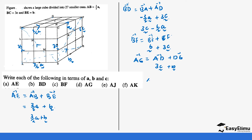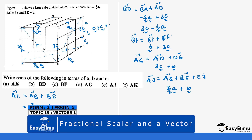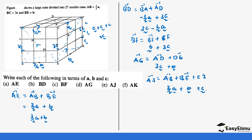For AJ, we go from A to B, then B to E, then E to J. So AJ = AB + BE + EJ. AB is 3/2a, BE is b. Now EF is divided into 3 equal parts, each equal to c - so c plus c plus c gives 3c. Therefore EJ is just c. So AJ = 3/2a + b + c.